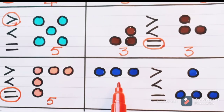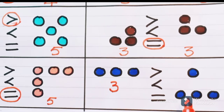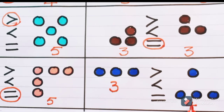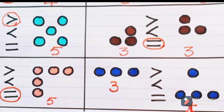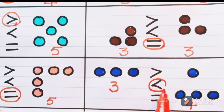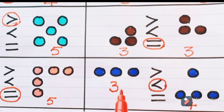Now see children, here how many circles do we have? One, two, three — here we have three. And here one, two, three, four — here we have four. So we are comparing the number three with the number four. Comparing with four, the number three is smaller. Three is the smaller number and four is the bigger number. So for smaller numbers, we will use less than symbol. Three is less than four.